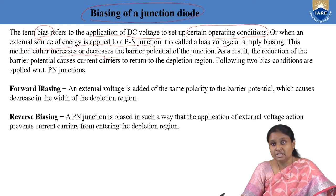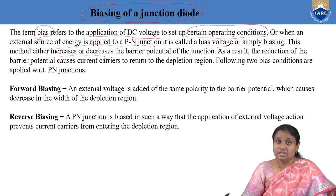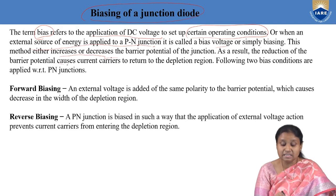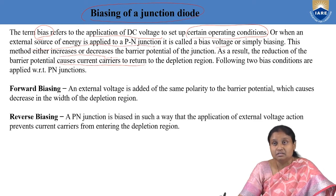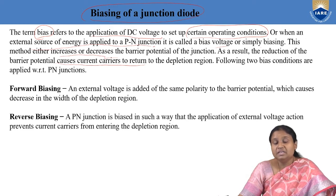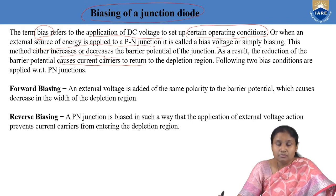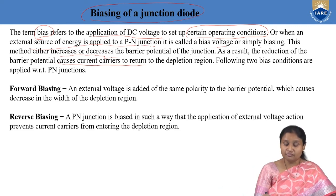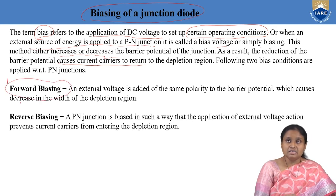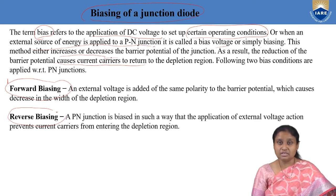Depending on how we bias the PN junction: if biasing is done such that the potential barrier decreases, there will be flow of current across the PN junction and it will act as a conductor. Whereas if the potential barrier is increased, the PN junction will act as an insulator and there will be no flow of current. When applying external DC voltage to a PN junction, there are two ways of biasing: forward biasing and reverse biasing.